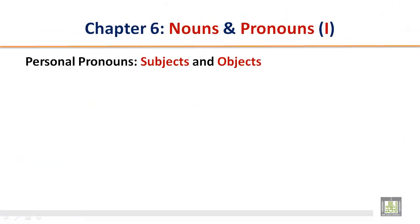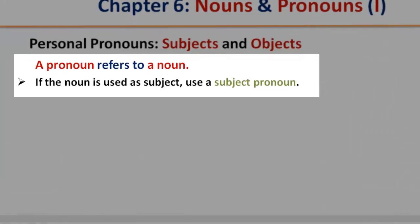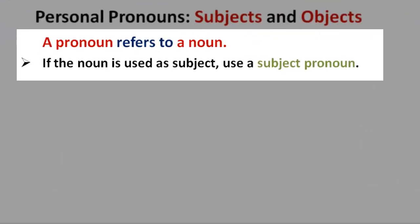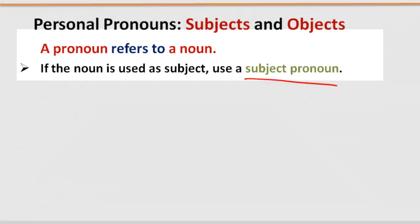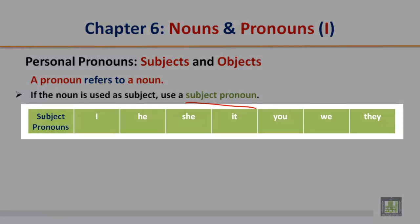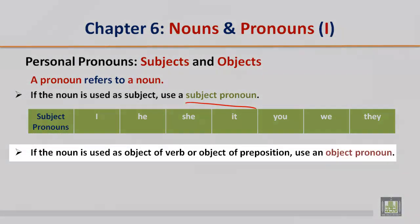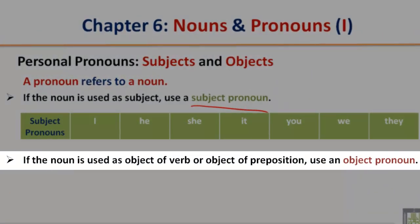Personal pronouns: subjects and objects. A pronoun refers to a noun. If the noun is used as a subject, use a subject pronoun. Subject pronouns: I, he, she, it, you, we, they. If the noun is used as an object of a verb or object of a preposition, use an object pronoun.